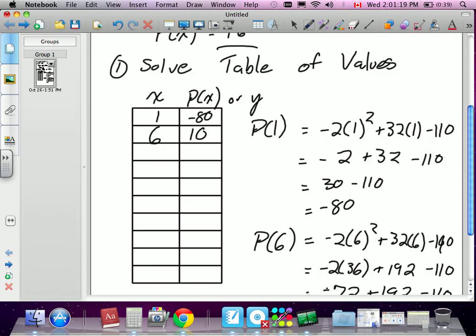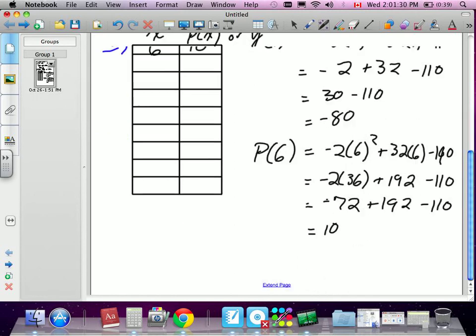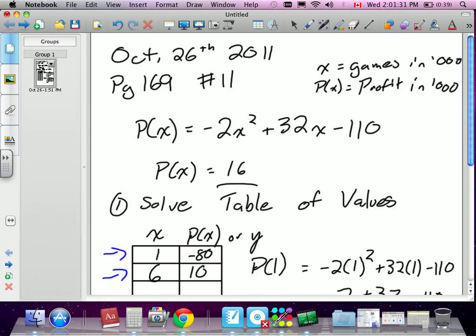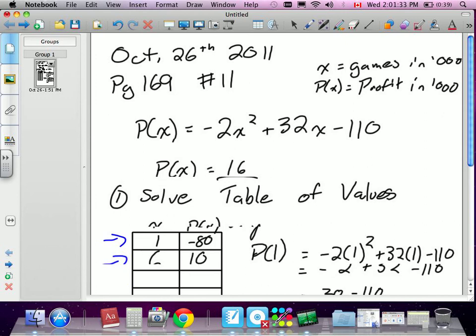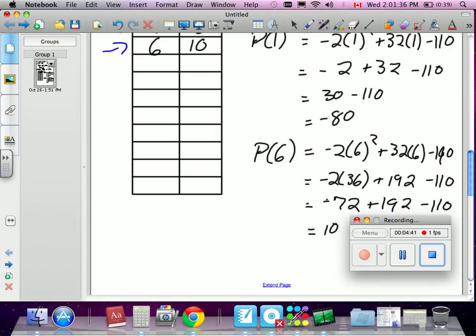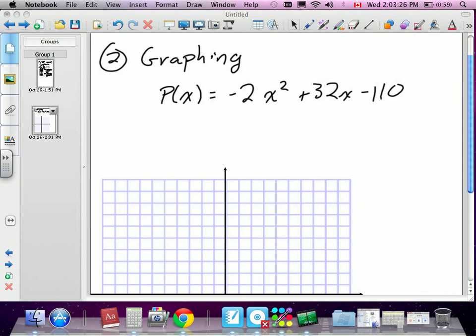But do you get the idea for solving with the table of values? We would continue to use trial and error. This isn't a very efficient method. We know other methods, but if you ever get stuck and you can't remember or you weren't able to get the right answer using the other ones, you can always use a table of values. The second method we know is by graphing.